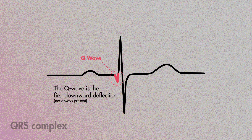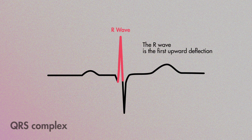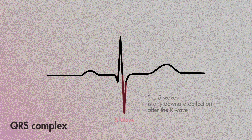The Q wave is the first downward deflection. The R wave is the first upward deflection. And the S wave is any downward deflection after that.